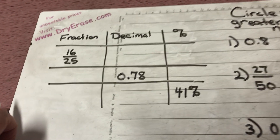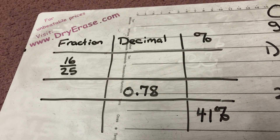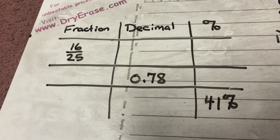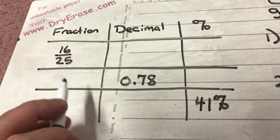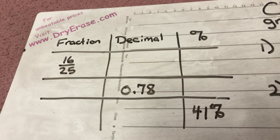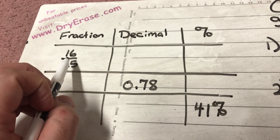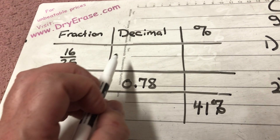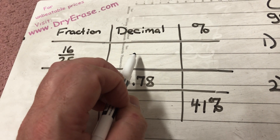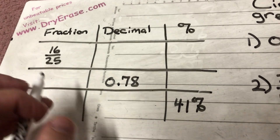Alright sixth grade, we're continuing on in our chapter of connecting fractions, decimals, and percents. There are three parts to what you're going to be doing in your assignment today. In the first part, you're going to get a table with a column for fractions, a column for decimals, and a column for percents. The row has the fraction 16 over 25, and it's your job to find the equivalent decimal and the equivalent percent.